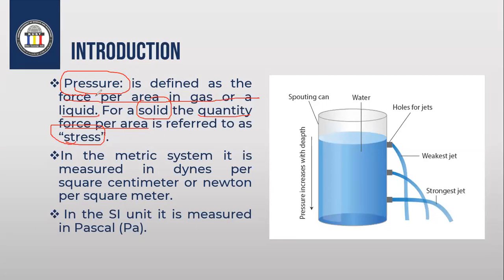In the metric system, pressure is measured by dyne per square centimeter or newton per square meter. These are the two unit types we will use in this lecture: dyne per centimeter squared and newton per meter squared. The SI unit is Pascal, but we will not use Pascal — we are using newton per meter squared and dyne per centimeter squared instead.